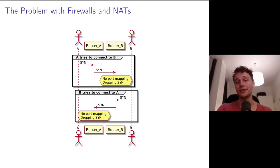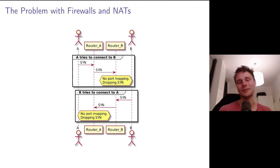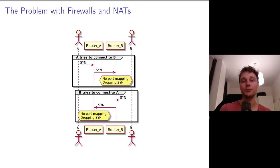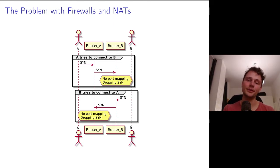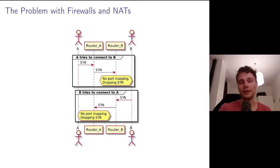The problem is that A cannot connect to B directly and B cannot connect to A directly. If A tries to establish a TCP SYN connection, that SYN would be sent to Router A, forwarded to Router B, but Router B would see that SYN coming from A without any packets coming the other way, so it has no port mapping in its state table and simply drops the SYN. The same situation applies in reverse: B sends a TCP SYN to Router B, which forwards it to Router A, but Router A has no port mapping from A to B and drops it.